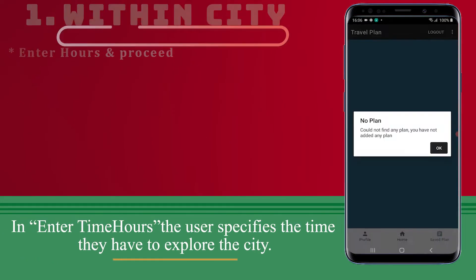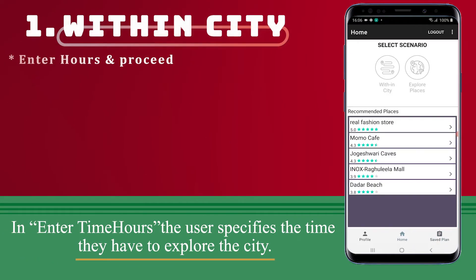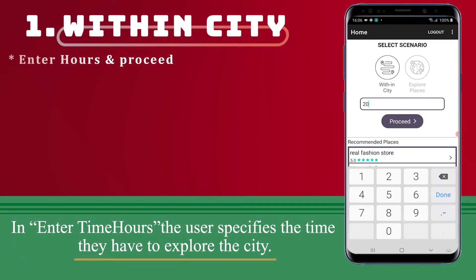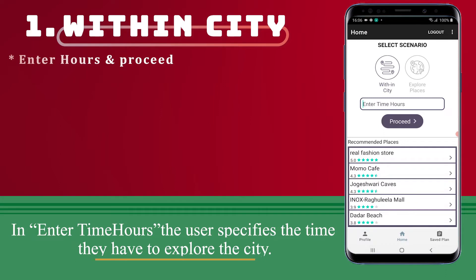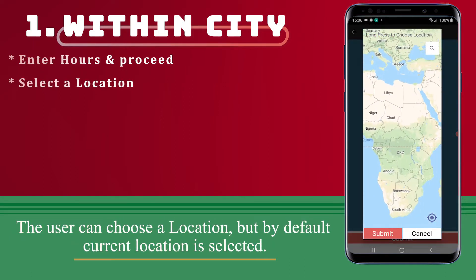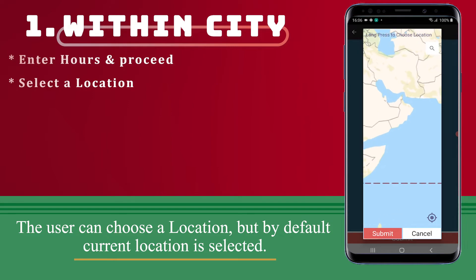In Enter Time Hours, the user specifies the time they have to explore the city. The user can choose a location, but by default the current location is selected.